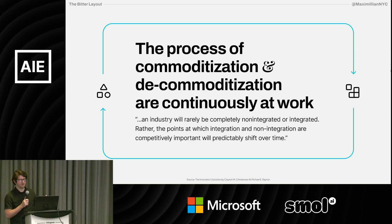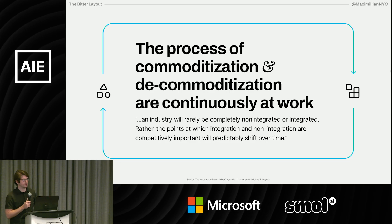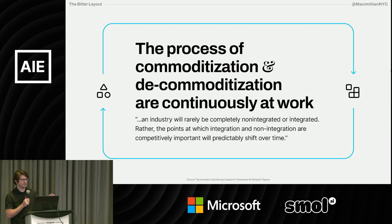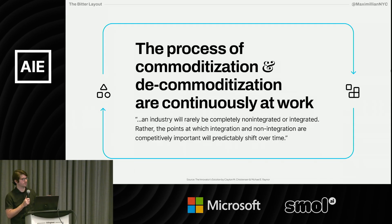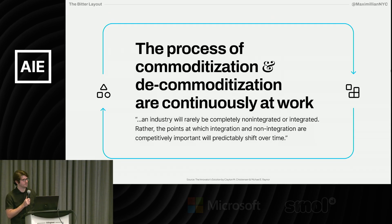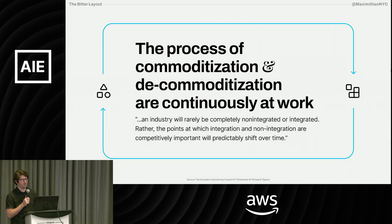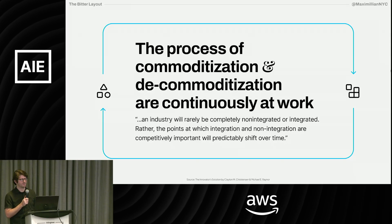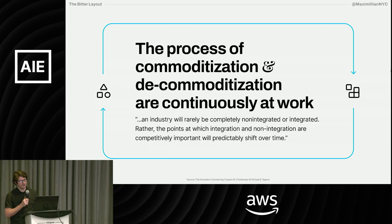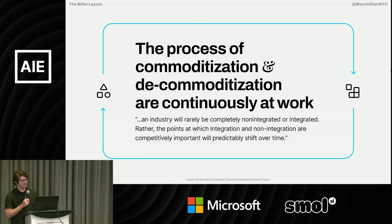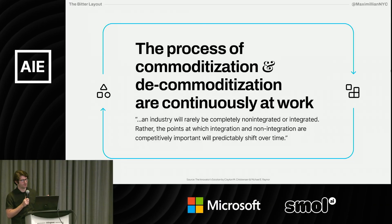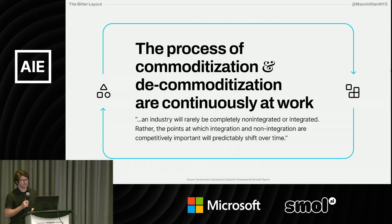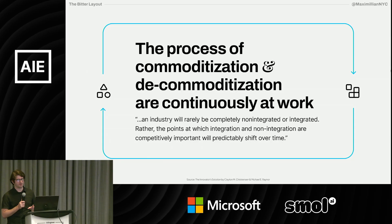Their theory uses IBM as an example. When they started out making mainframe computers, very integrated. Then they shifted to personal computers and started to make it more modular. And then of course, the whole computer itself ended up commoditizing at some point and they got out of that business. Thinking through today what parts of the AI industry are commoditizing and decommoditizing can help us think about how to design interfaces.